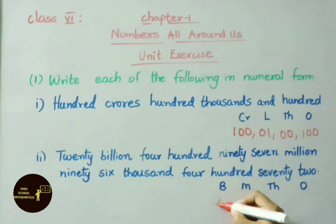20 billion. Billions below you mention 20. 497 million. Millions below you mention 497. Next, 96 thousand. Thousands below you mention 096. 472 mentioned under ones period below 472. So this is our number 20,497,096,472.